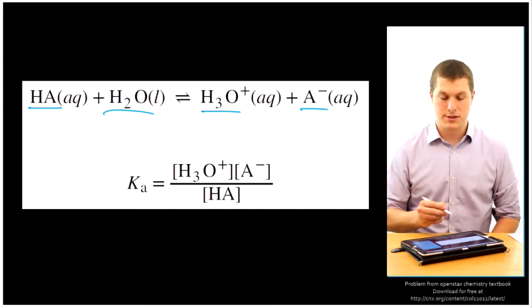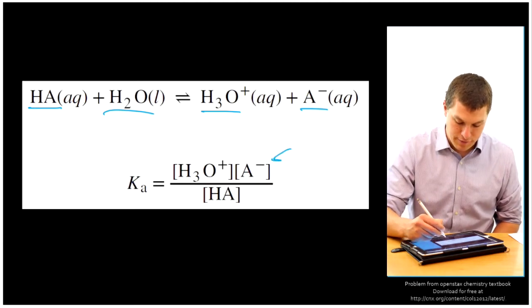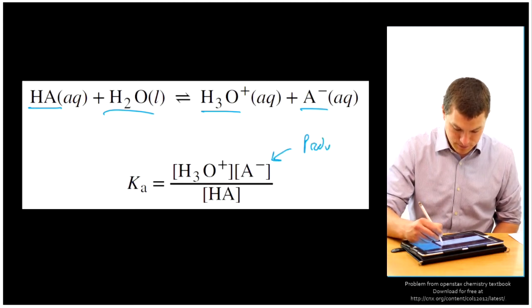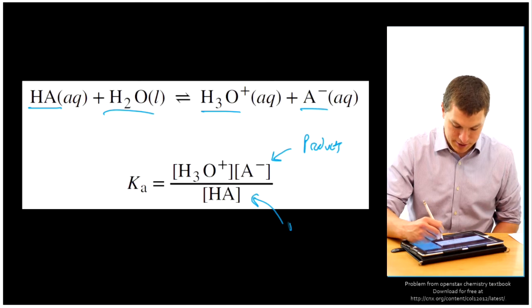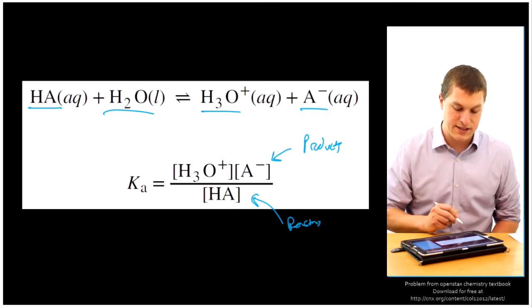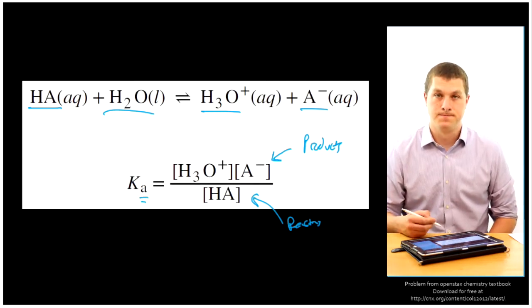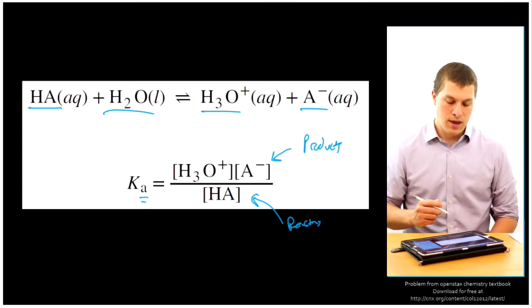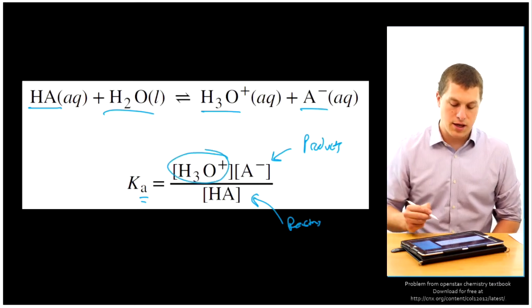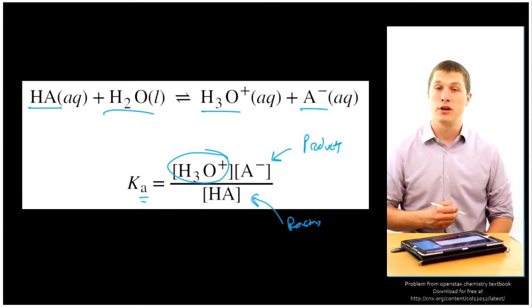We can write an equilibrium constant for it, and it's the same as equilibrium constants you've been seeing before. This stuff up here is my products, and this stuff up there is your reactants, and we dropped water because it was a liquid, and we just add this A to remind you that it's for an acid. But think about what this means. My hydronium ion concentration goes up if Ka goes up.